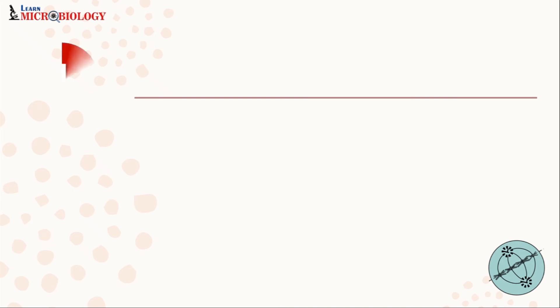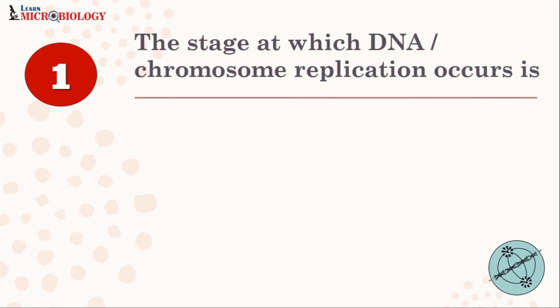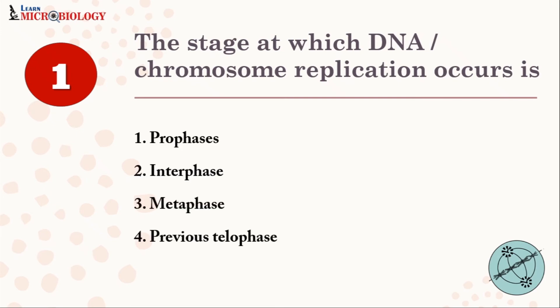Now we will solve certain questions based on this concept which have been asked in exams. Question 1: The stage at which DNA or chromosome replication occurs is — Option 1: S phase; Option 2: interphase; Option 3: metaphase; Option 4: M phase. Comment below your answers along with the proper question number.